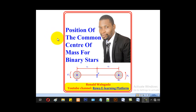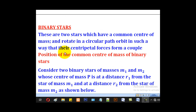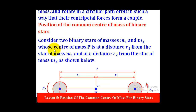Hello viewers, this is Warga Daru and I'm taking you through today's tutorial on how to determine the position of the common center of mass for binary stars. Binary stars are two stars which have a common center of mass and rotate in a circular orbit in such a way that their centripetal forces form a couple.